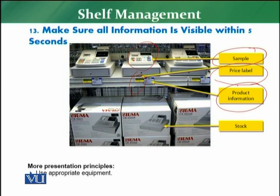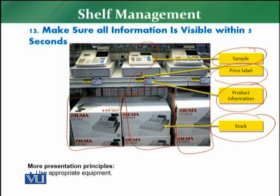After seeing the price label, the customer should be able to clearly see the product information — the description and key features. Finally, the customer should be able to see whether physical stock is available. If the sample unit is on display but the stock is not there, the customer will feel you do not have stock. So within five seconds, the customer should see: the sample, the price label, the product information, and the physical stock available.